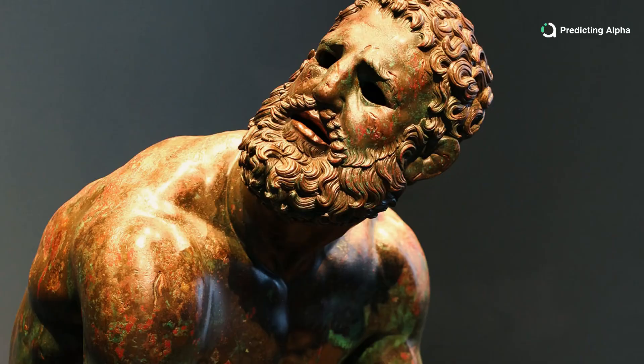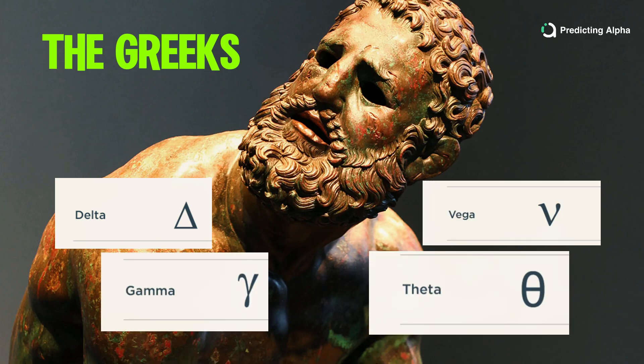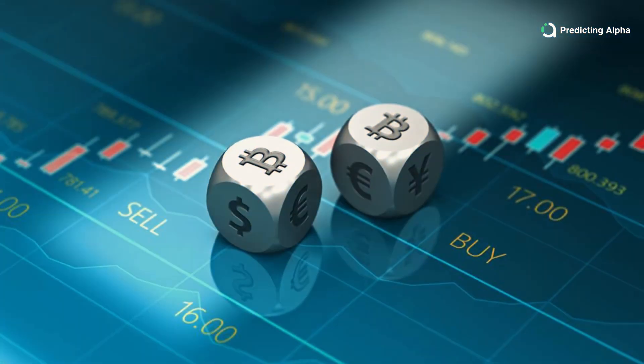If you want to sell options like a professional, then you need to understand your tools — the Greeks: Delta, Gamma, Theta, Vega. They aren't just some academic thing. They are actually how you describe and understand every risk you're taking as an option trader. And if you don't know what risks you're taking, then you're basically just gambling, period.